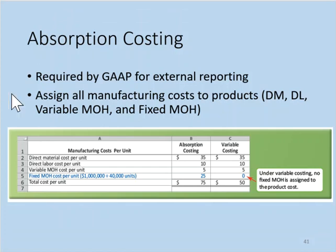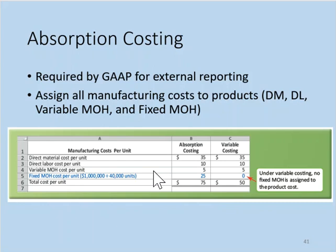Under absorption costing, products absorb fixed manufacturing costs as well as variable manufacturing costs. Both fixed and variable manufacturing costs are treated as inventoriable product costs — direct materials, direct labor, variable manufacturing overhead, and fixed manufacturing overhead — giving us a total cost per unit of $75.